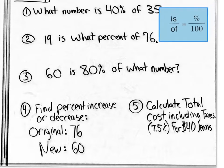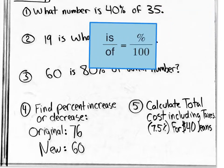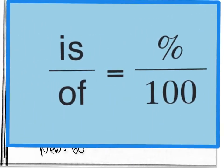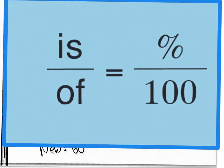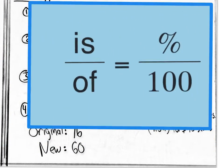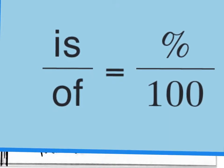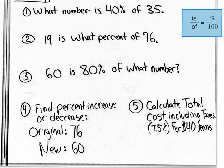The key to percent notes: is over of equals percent over 100. Whatever number is your 'is' value goes on top, whatever is your total 'of' value goes on the bottom. Percent really means per 100, which means divided by 100. So when you say 50%, you're really saying 50 divided by 100, which is half. We need to memorize and use this proportion to solve these types of questions.